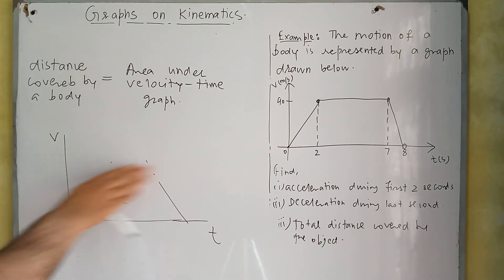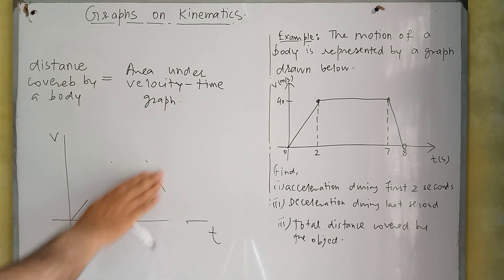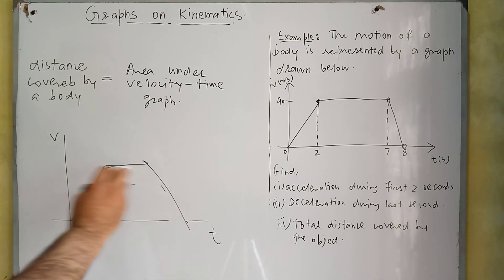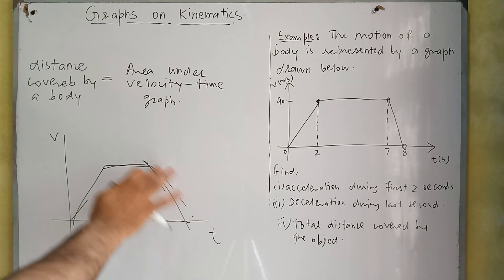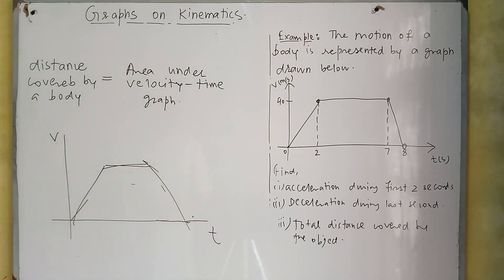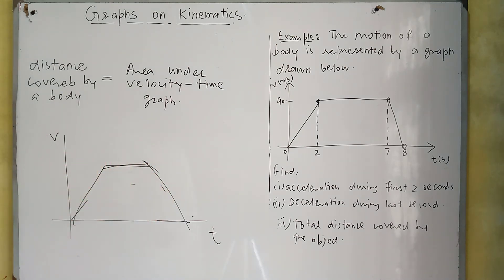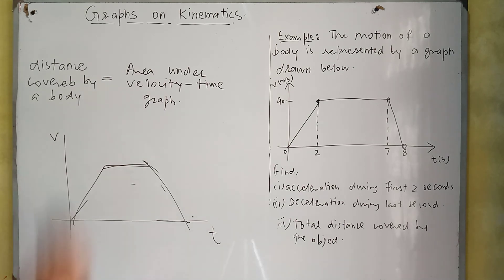Similarly, if we have a trapezoidal graph — if the movement of a body is represented by a trapezium — and we need to find the distance covered, we calculate the area of that trapezium. That area will be equal to the distance covered by the body.